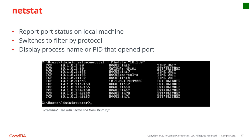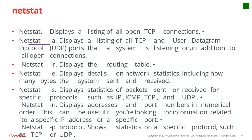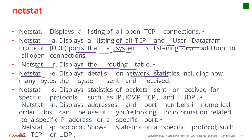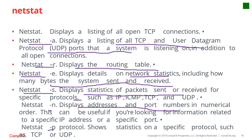NETSTAT, or Network Statistics, is a command to identify open ports and active connections, along with the ports used within those connections. Specific NETSTAT commands include: -a (displays all TCP and UDP ports), -r (displays the host routing table), -e (displays network statistics including bytes sent and received), -s (statistics of packets sent and received), -n (displays addresses and port numbers), and -p (statistics for a specific protocol such as TCP or UDP).